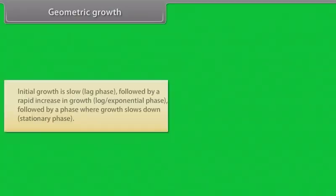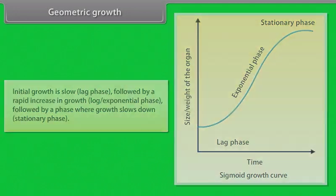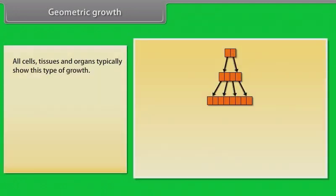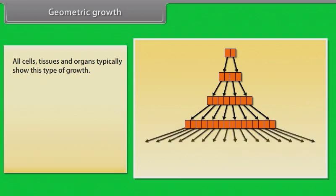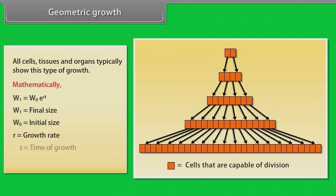Geometric growth - initial growth is slow, followed by a rapid increase in growth, followed by a phase where growth slows down. All cells, tissues, and organs typically show this type of growth. Mathematically, W1 equals W0 into exponent Rt. W1 equals final size, W0 equals initial size, R equals growth rate, T equals time of growth, E equals base of natural logarithms.